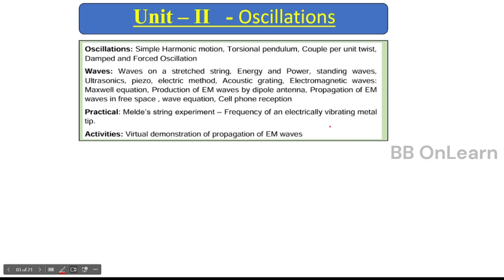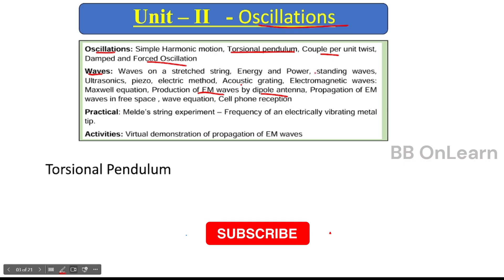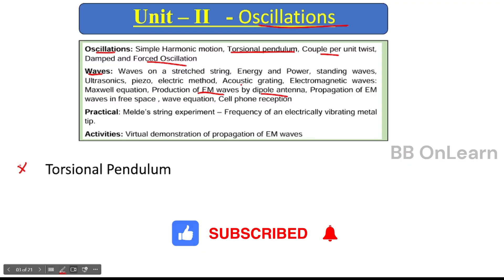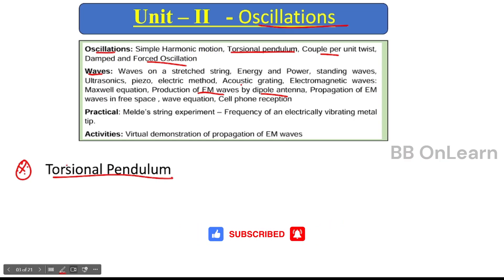Unit 2 is Oscillations and Waves. Topics include: simple harmonic motion, torsional pendulum, damped and forced oscillations, standing waves, ultrasonics, piezoelectric methods, acoustic gratings, electromagnetic waves, Maxwell equations, and dipole antenna. The first and most important 16-mark question in this unit is the torsional pendulum — very very most important.